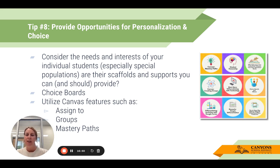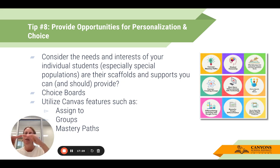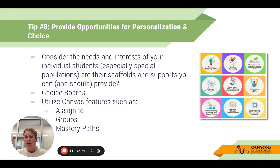Utilize features in Canvas such as the 'Assigned To' feature when creating an assignment, so you can assign it to specific groups of students. Canvas Groups is another way to assign to specific groups. Mastery Paths, if you're familiar with that feature in Canvas, lets you create an assessment that checks where students are, and based on their score, they get taken to an activity. Students who scored low might go to reteaching videos and practice questions. Middle-of-the-road students get something more challenging. Students who aced it get an extension activity. Think about ways to provide personalization and choice when designing Canvas modules or pages for remote and online learning.